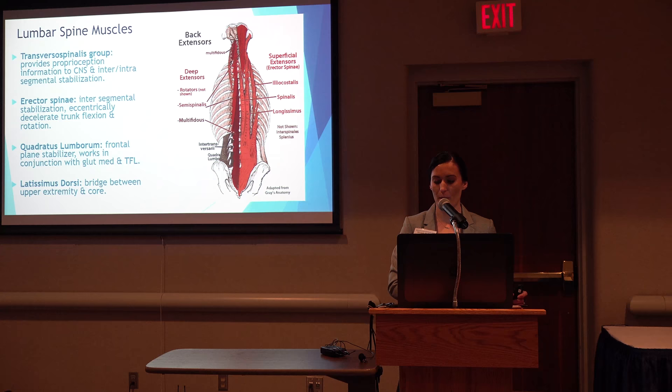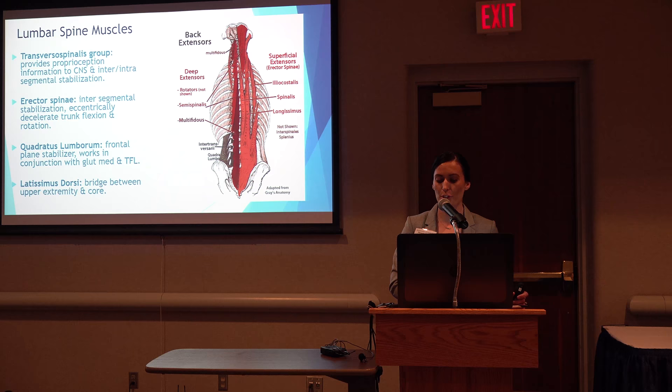The next more superficial layer is the erector spinae group, consisting of the iliocostalis, longissimus, and spinalis. Besides providing intersegmental stabilization, this group acts unilaterally to produce side flexion, bilaterally to produce trunk extension, and eccentrically to decelerate trunk flexion and rotation.